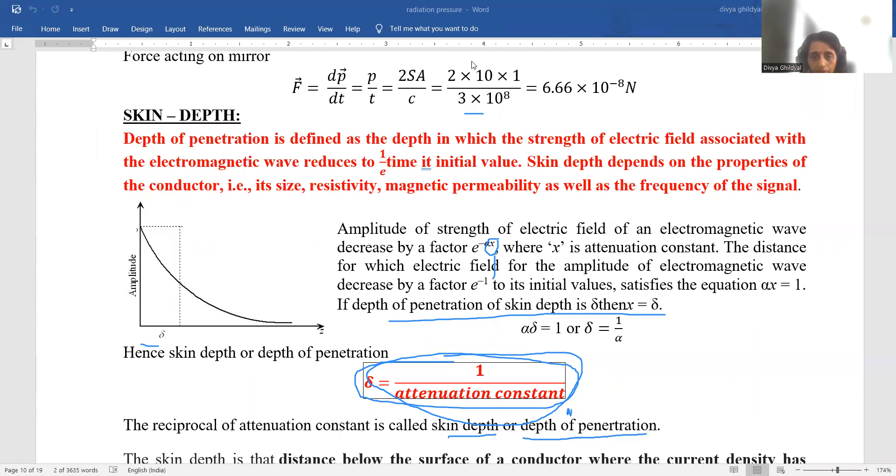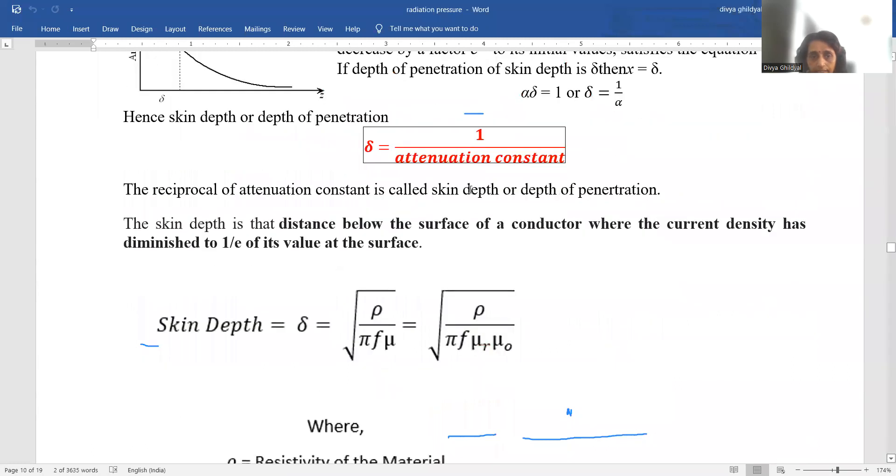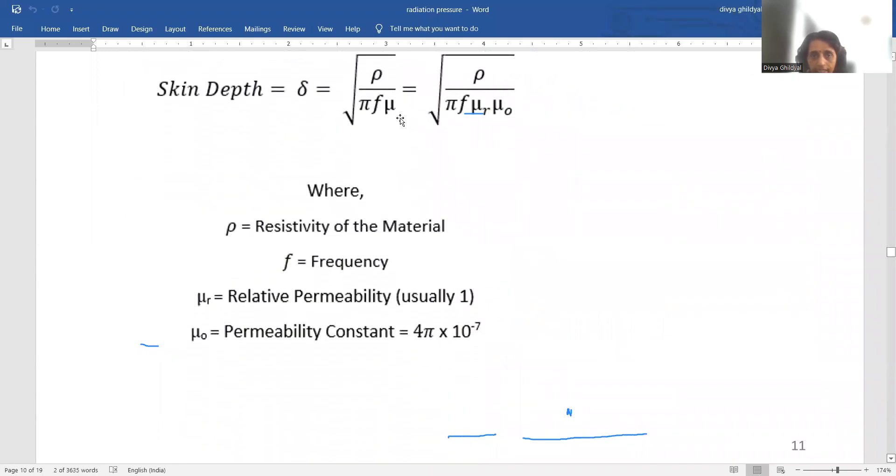In other simple words, if you want to memorize skin depth for your exams, there is another simple method. Skin depth is that distance below the surface of a conductor where the current density has diminished to a factor of 1 upon e times of its value at the surface.